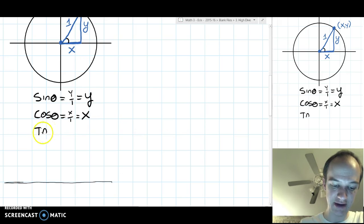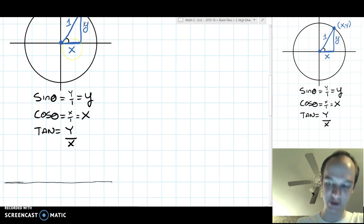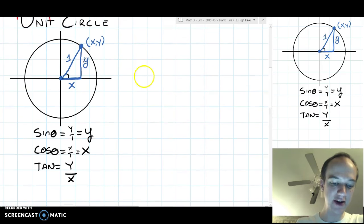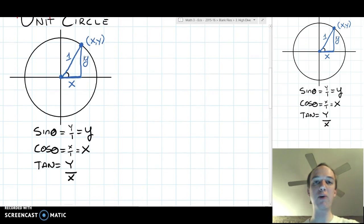And tangent of theta is going to be the y over the x, that is the opposite over the adjacent side of each of these triangles. So these three critical formulas are what let us do the sine and cosine and tangent of quadrant angles, even though there's no triangle that you can draw.